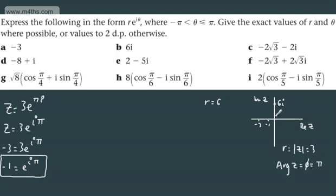We can see that the argument, arg z, is going to be equal to π/2. So we can now write this as z equals 6e^(π/2·i).